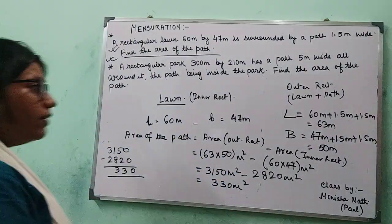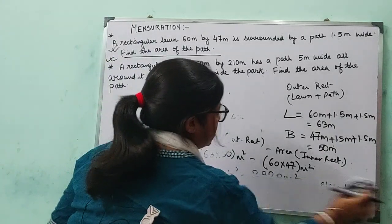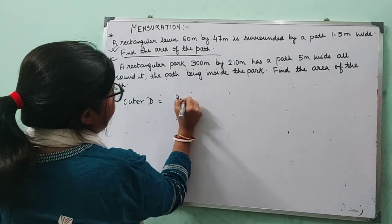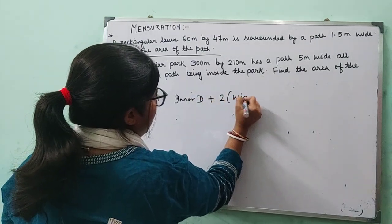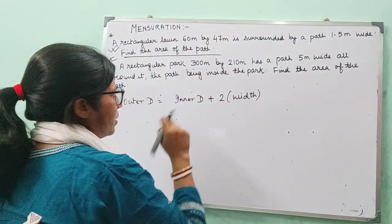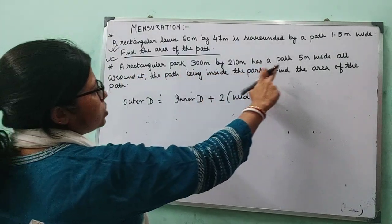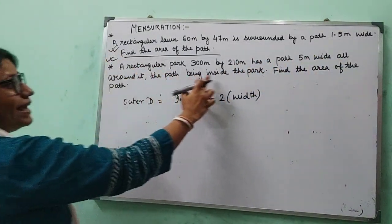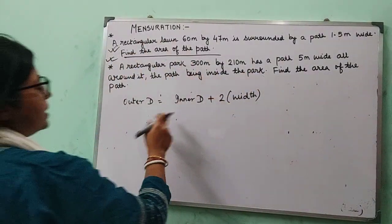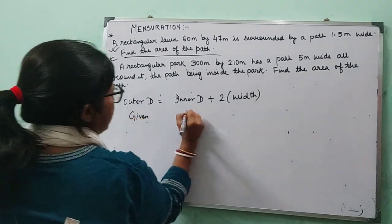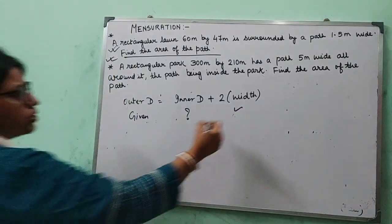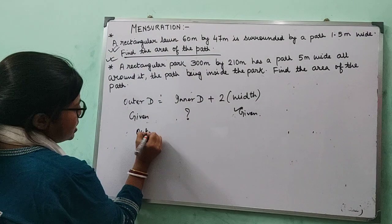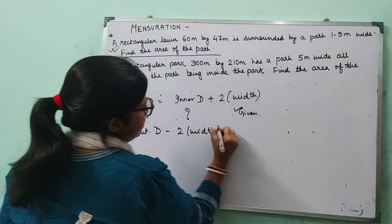In this problem, the outer dimensions are given. Earlier, I said outer dimensions equals inner dimensions plus 2 times the width. Now in the second sum, the outer rectangle dimensions are given. The path is inside, so I need to find the inner dimensions. Rearranging the formula, inner dimensions equals outer dimensions minus 2 times the width.